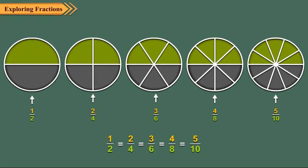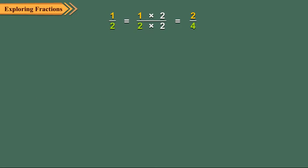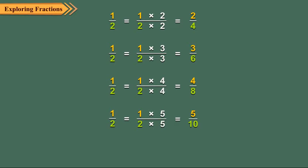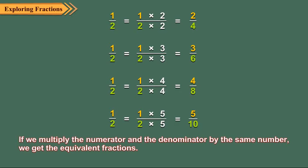When we multiply the numerator and denominator of one upon two by two, we get two upon four. When we multiply the numerator and denominator of one upon two by three, we get three upon six. Similarly, when we multiply the numerator and denominator of one upon two by four and five, we get four upon eight and five upon ten, respectively. Thus, if we multiply the numerator and denominator by the same number, we get the equivalent fractions.